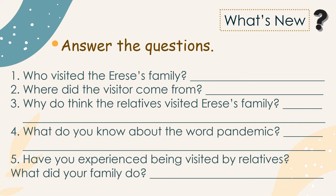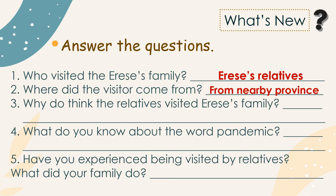Let us answer the questions. Who visited Eres's family? Yes, Eres's relatives. Where did the visitors come from? The visitors came from a nearby province. For questions three, four, and five, answer them with your relatives or parent beside you. Why do you think the relatives visited Eres's family? Because they had not seen each other for almost a month because of the pandemic. What do you know about the word 'pandemic'? Have you experienced being visited by relatives? What did your family do?